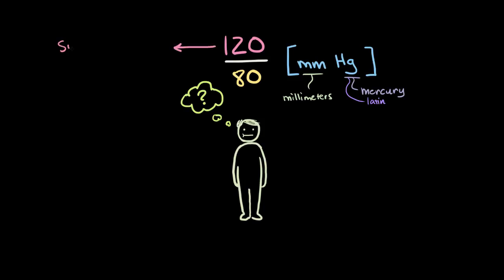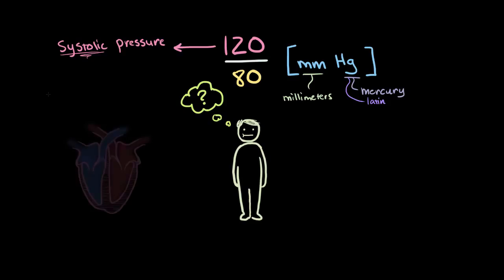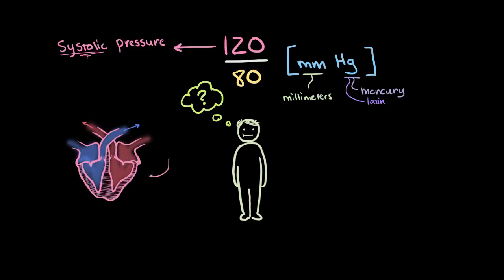Okay, so this first number, this top number, is known as your systolic blood pressure. Remember that systole is the phase of the heart cycle where the heart contracts and pumps out blood, or simply during a heartbeat.